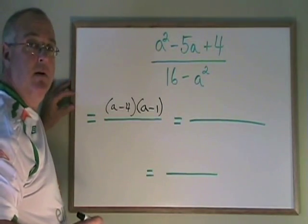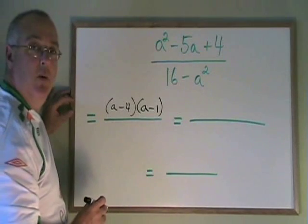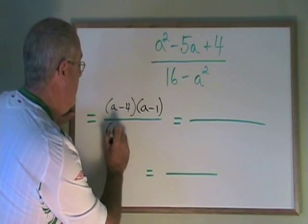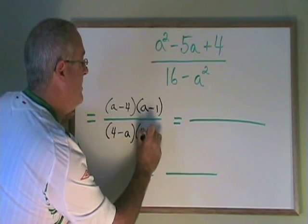On the bottom, I use difference of squares. 16 minus a squared factors to 4 minus a, 4 plus a.